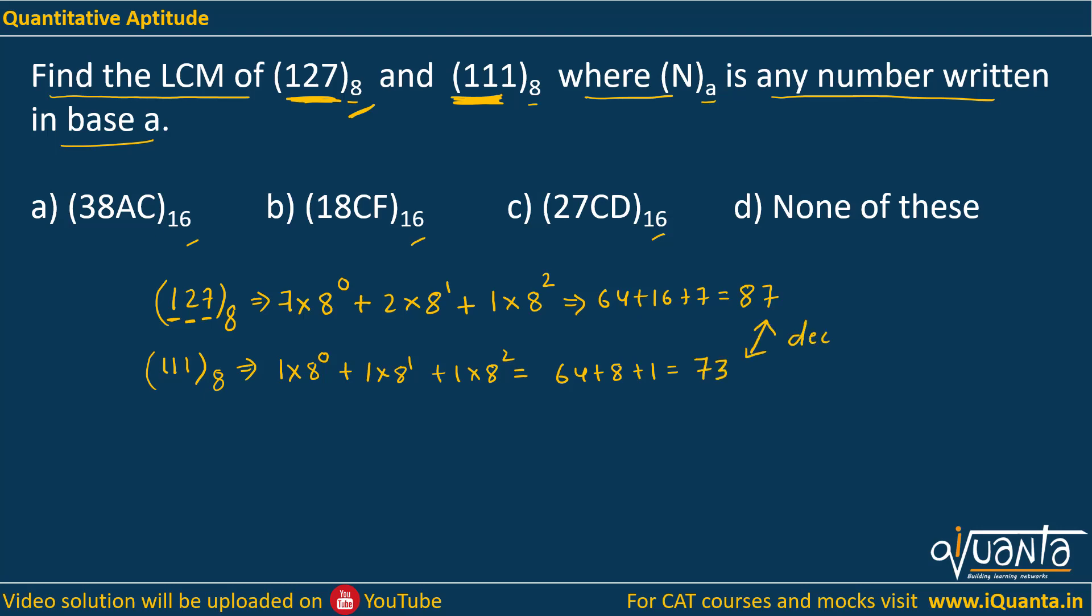We can take the LCM now. Since these are co-prime to each other, their LCM will be their multiplication. So 87 × 73 gives us 6351. This is the LCM in base 10, which is decimal.